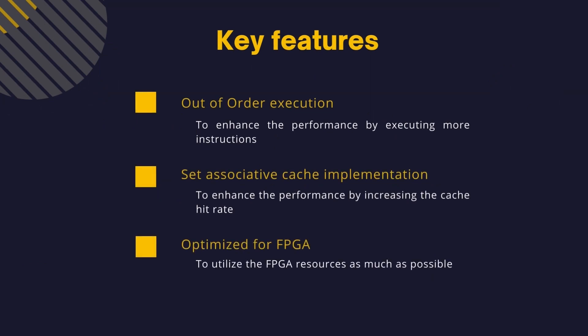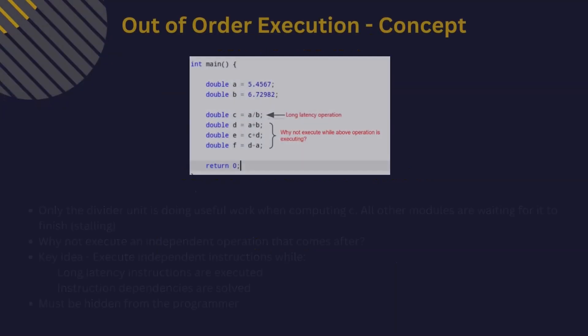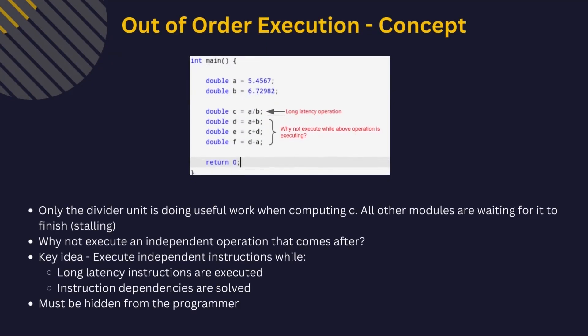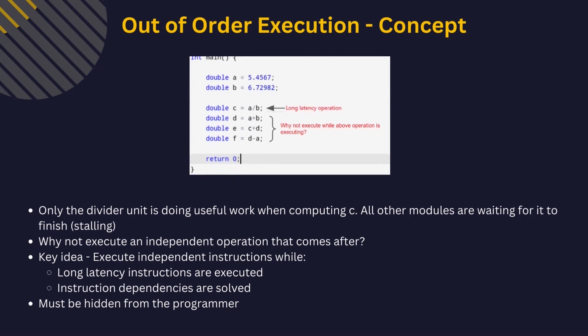The key features of our processor are: support for the RISC-V RV64IMA instruction set architecture, out-of-order execution, and set-associative cache. Consider a simple C code example where only the divider unit is doing useful work when computing a result — all other modules are waiting for it to finish. This is known as stalling.